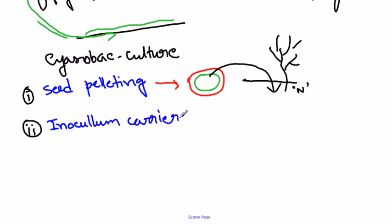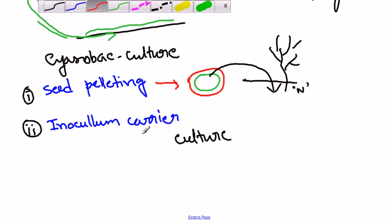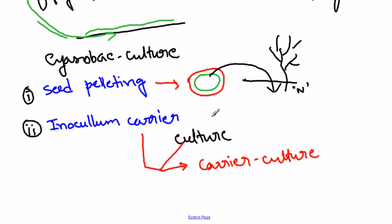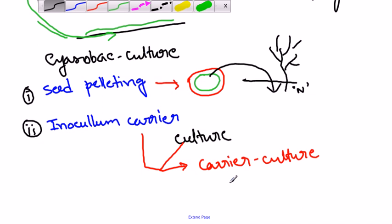The second technique is called carrier mediated inoculum, or the inoculum carrier technique. In this case, we take the cyanobacterial culture and attach it to some kind of carrier, forming a carrier-culture complex. Using this carrier-culture complex, we can apply it directly into the field. The carrier must be sterile — sterile soil can be used as a carrier. Usually peat is used as a carrier in other countries.